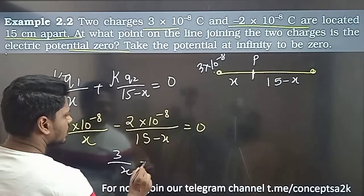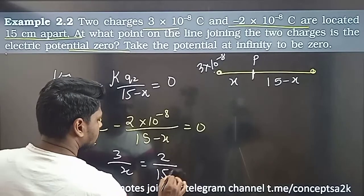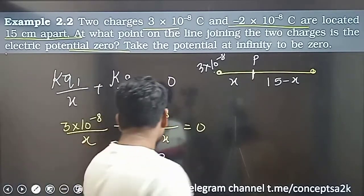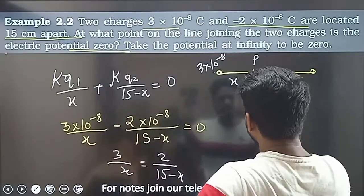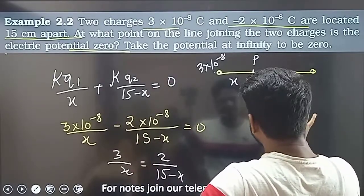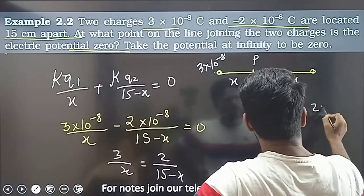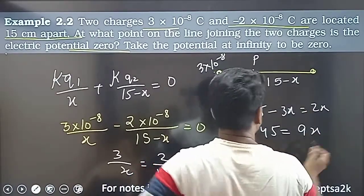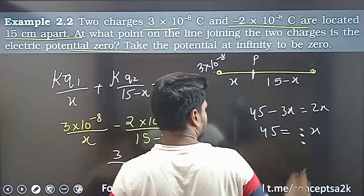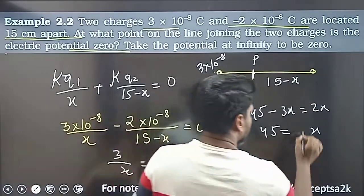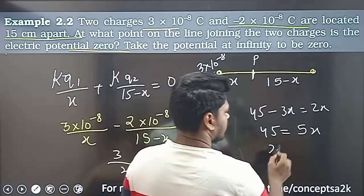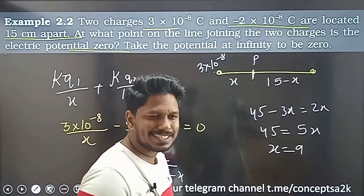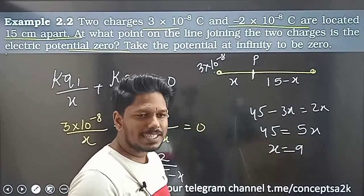Cross multiplying: 45 minus 3x equals 2x, so 45 equals 5x, giving x equals 9 cm. Then 15 minus x equals 6 cm. So the point where the potential is zero is at 9 cm from one charge and 6 cm from the other.